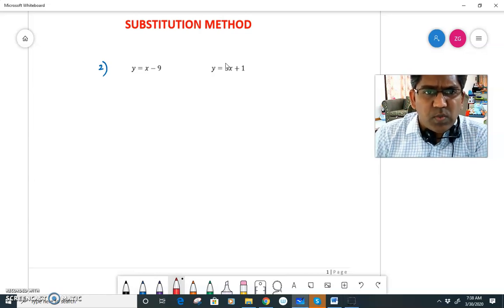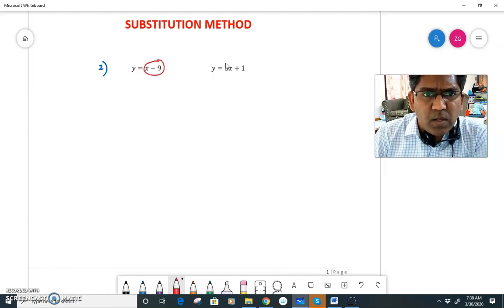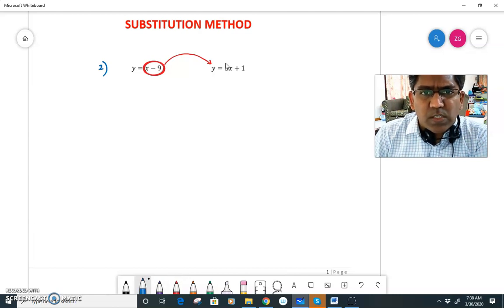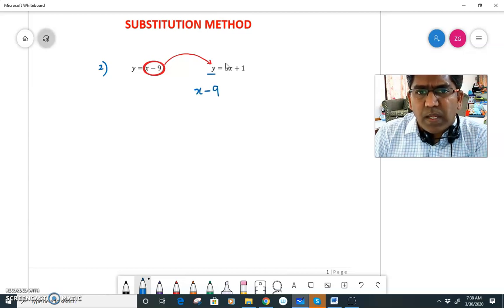So in my second equation, in place of y, I'll write x minus 9, and the right-hand side will stay the same, 3x plus 1. So now we have an equation where you have only one variable, which is x.